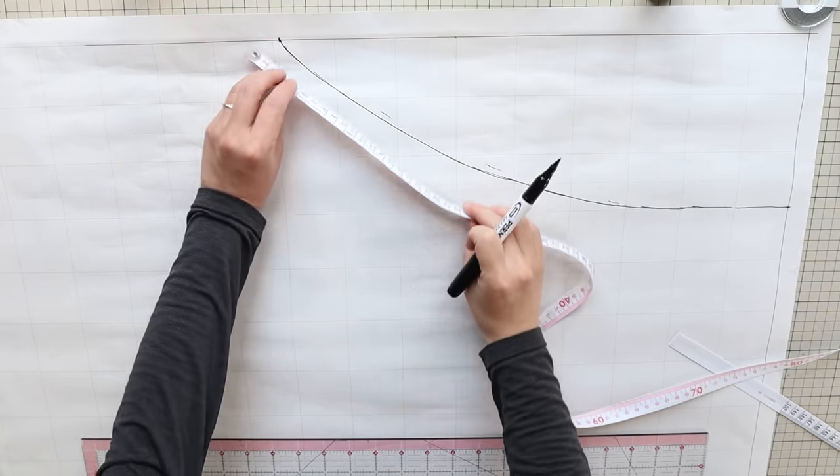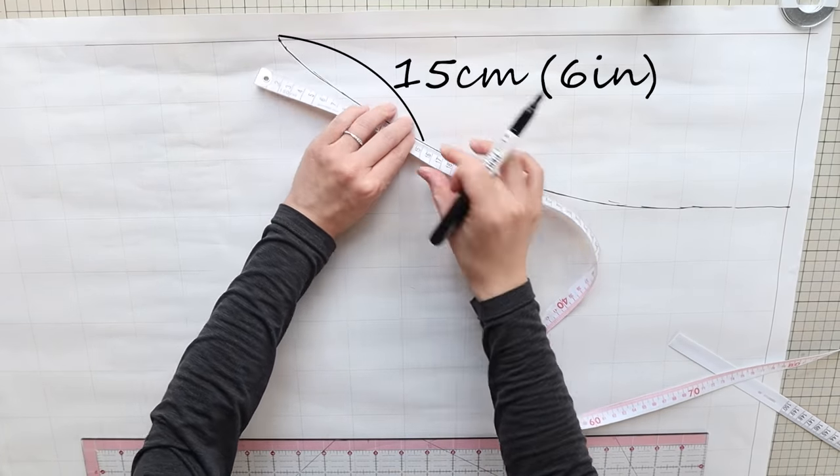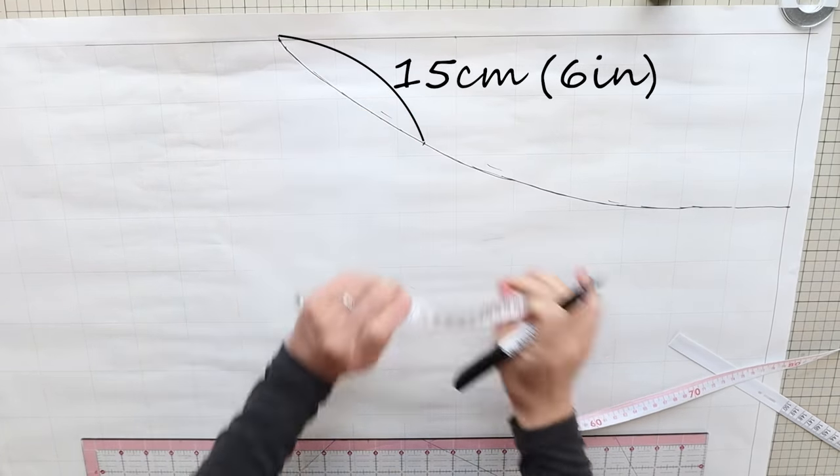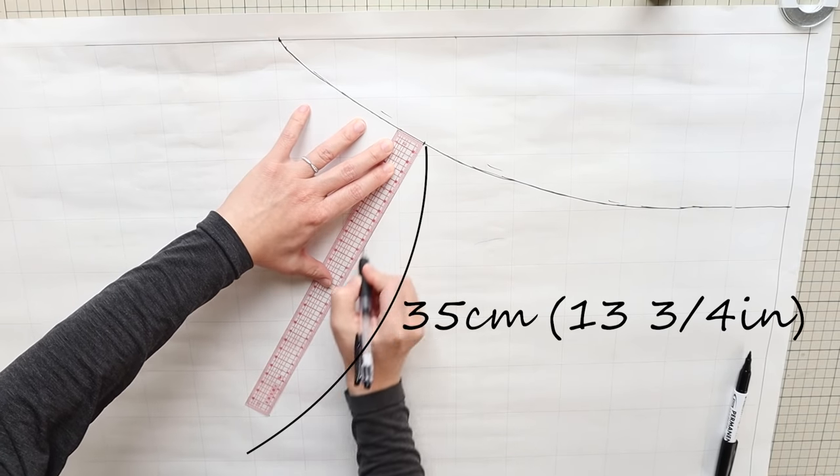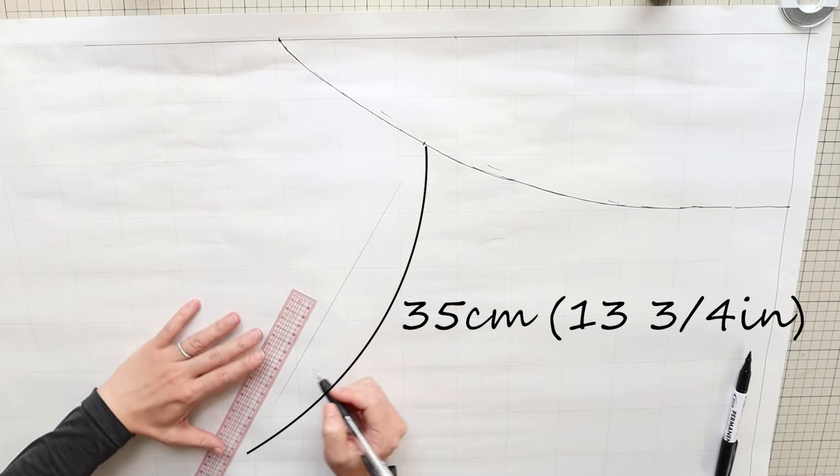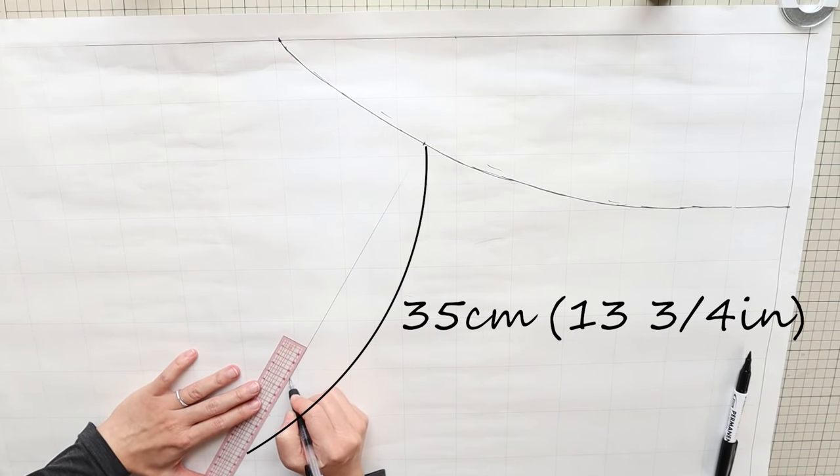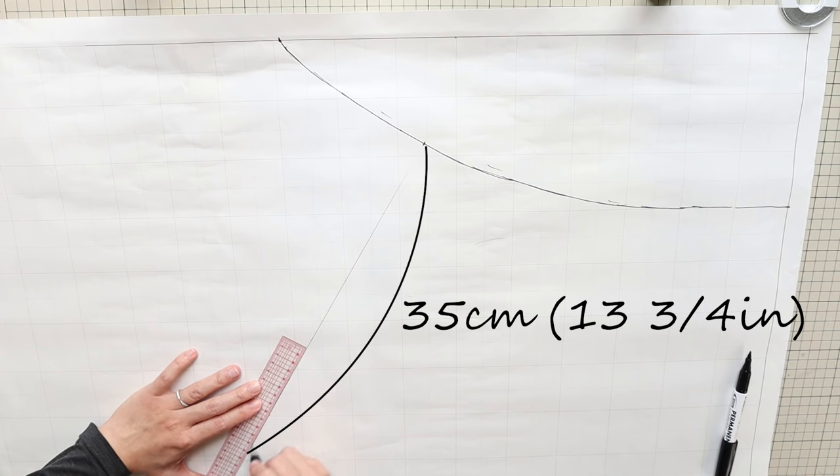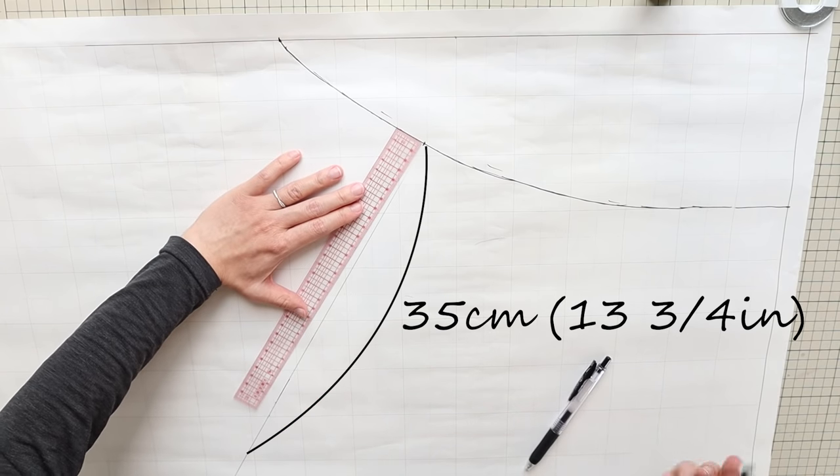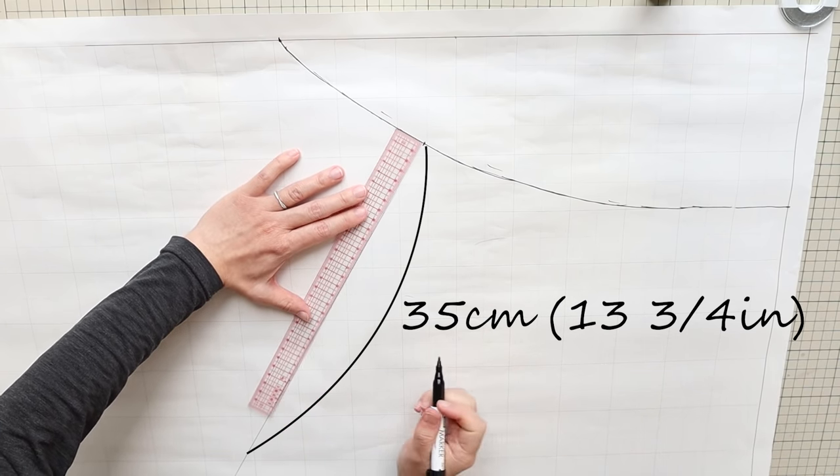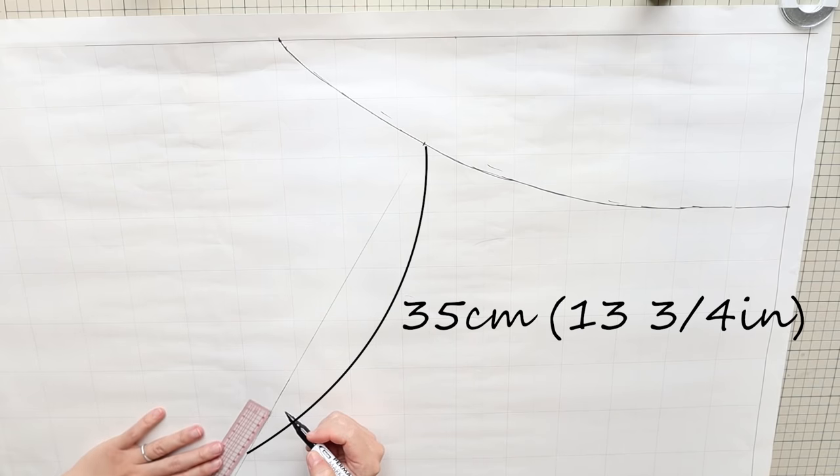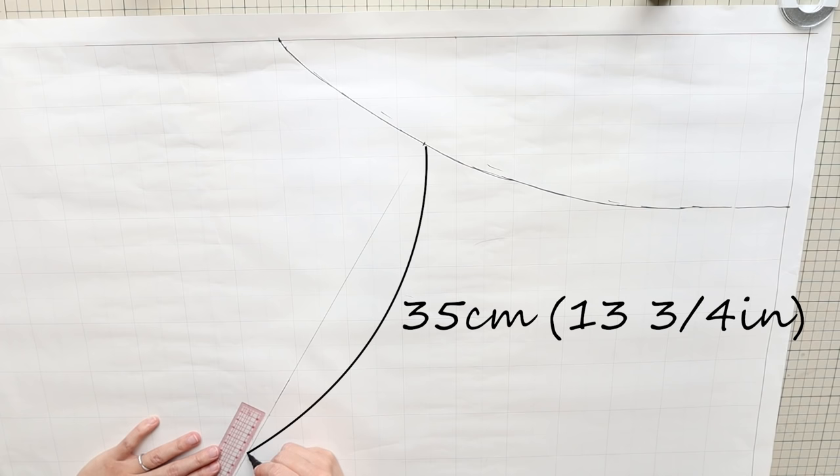Next, from this end of the curved line, measure 15 centimeters or 6 inches. From there, measure 35 centimeters or 13 and 3 quarter inches down and this should be perpendicular to the curved line. My height is about 5 foot 1 and I use 35 centimeters here. But if you're taller, you can increase it to 40 to 45 centimeters so you have more coverage on the front side of your body.